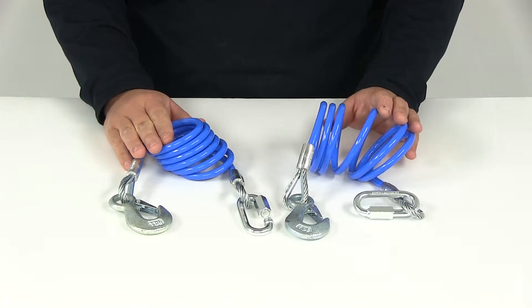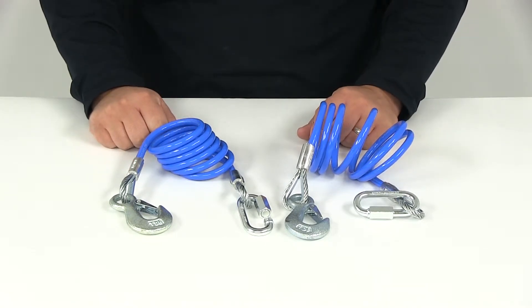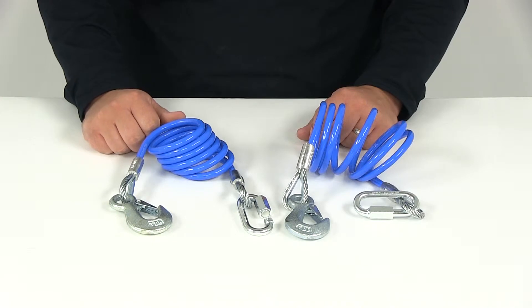You'll get two safety cables. They are coiled but have an overall length of 68 inches and a capacity of 6,000 pounds.